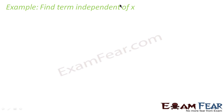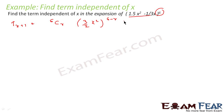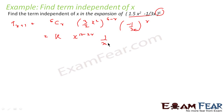Let us take an example where we have to find the term independent of x. The expansion is (3/2 × x² - 1/(3x))^6. We find T(r+1) = 6C(r) × (3/2 × x²)^(6-r) × (-1/(3x))^r. Concentrating only on the power of x, we get x^(2(6-r)) × x^(-r) = x^(12-2r-r) = x^(12-3r).